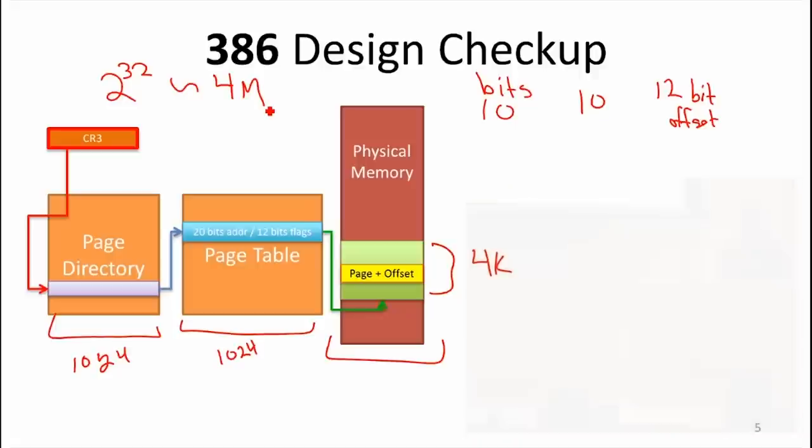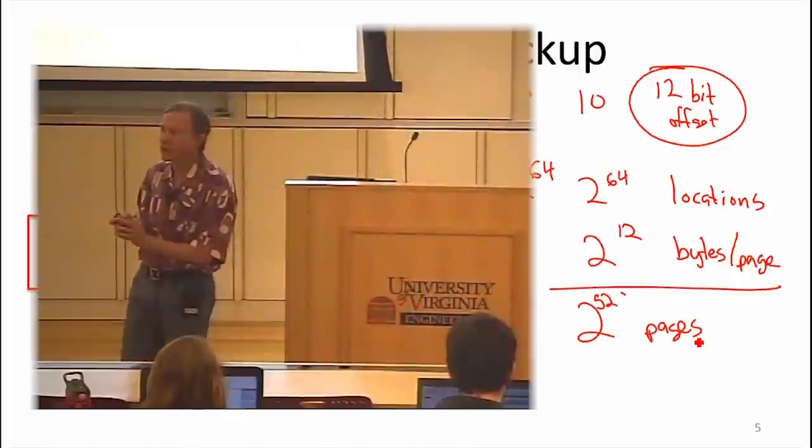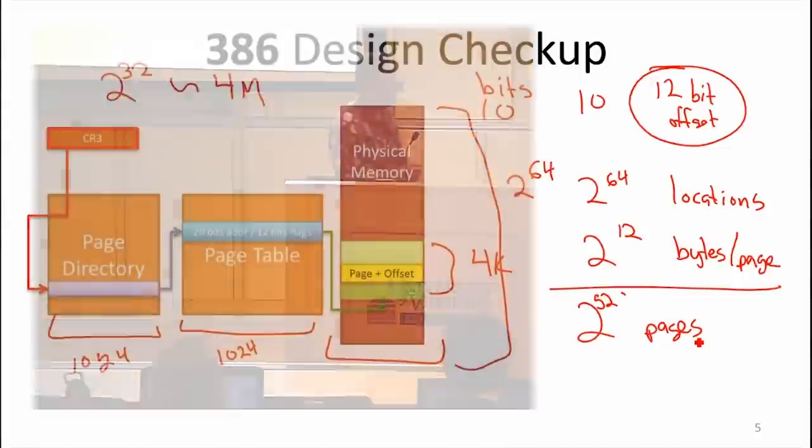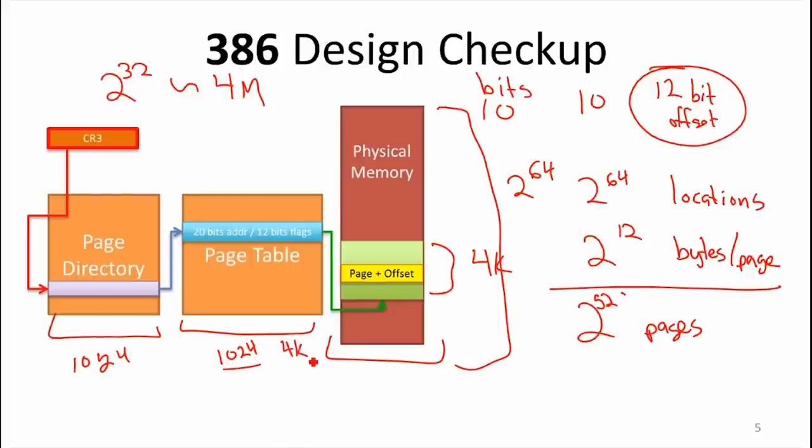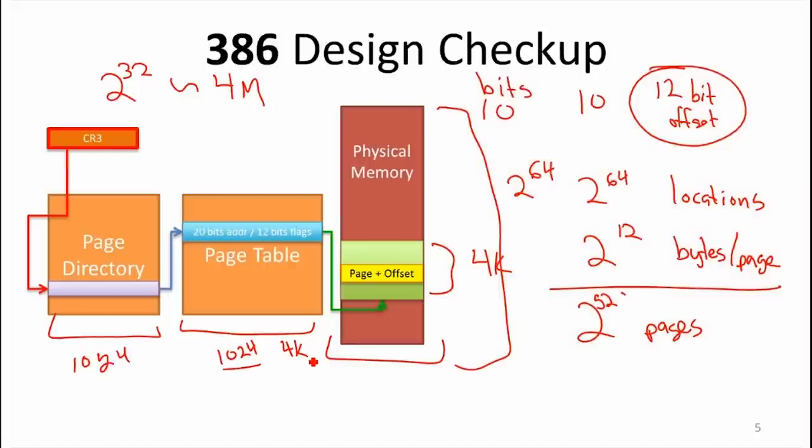Suppose we keep the same design, but now we want physical memory, or an address space, not a physical memory. A physical memory is going to be 2-bit. But we want an address space of 64 bits. So how big would our page table have to be if we kept the same design? The offset is the location within the page. In this design, we've got 12 bits. So we've got 2 to the 12 locations in a page. And if we had 2 to the 64 locations, we've got 2 to the 52 pages.